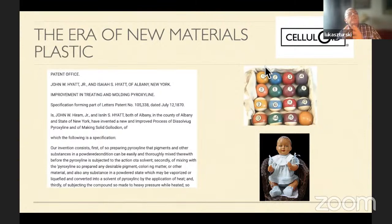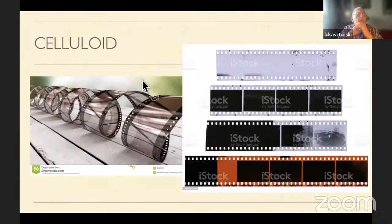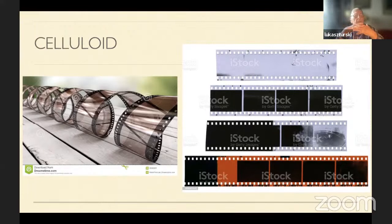Early photography was hindered by the fact that the plates covered with photosensitive materials were heavy and made of glass. We already have photography of essentially all the battles of the Civil War in the United States — for example, the Battle of Gettysburg. The application of thin celluloid layers led to photography film and films for movies.